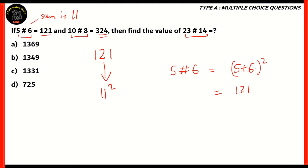So 5 hashtag 6 would actually turn out to be 5 plus 6 the whole squared, which equals 121. We've got a potential candidate for the relation. Let's test that out on 324. 10 plus 8 the whole squared equals 18 squared, and 18 squared is actually 324. As you can see, the relation holds.